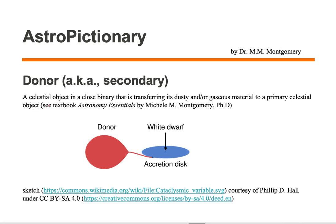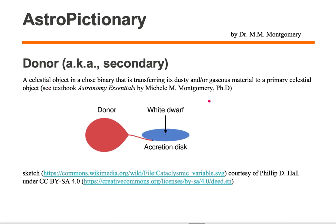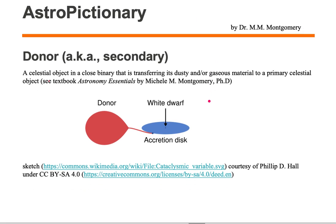A donor is also known as a secondary. It is a celestial object in a close binary that is transferring its dusty and or gaseous material to a primary celestial object. Let's take a look at an example of a donor.